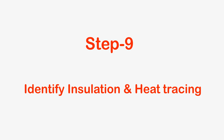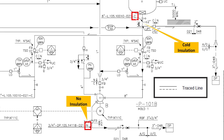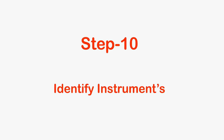Step 9: Identify Insulation and Heat Tracing Details. Here we should identify whether the line is insulated or not. This information is generally given along with the line numbers, indicated by a letter: N for no insulation, C for cold insulation, H for hot insulation. To identify heat-traced lines, look for the line with double lines as shown in the diagram.